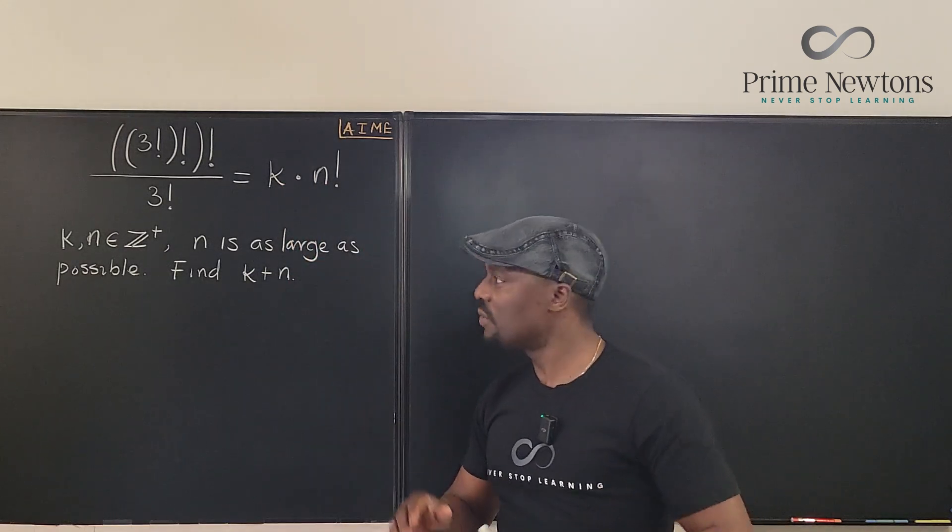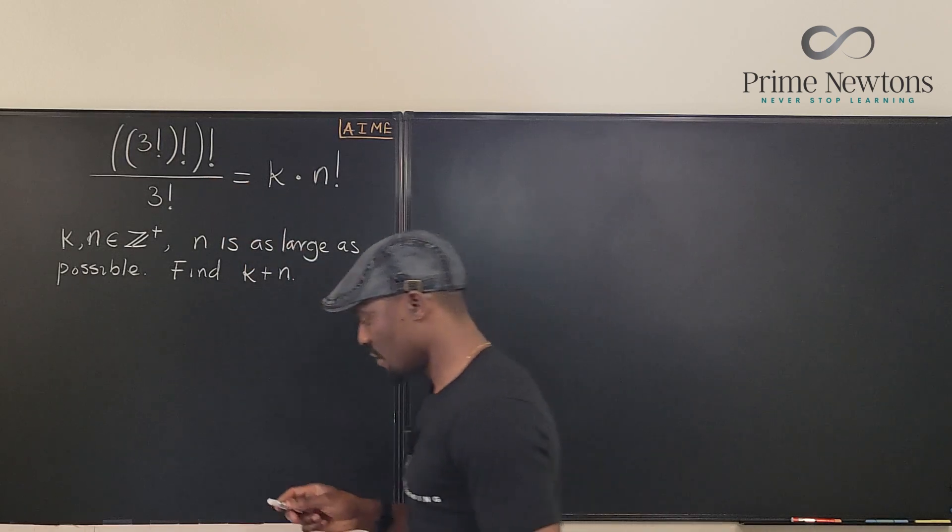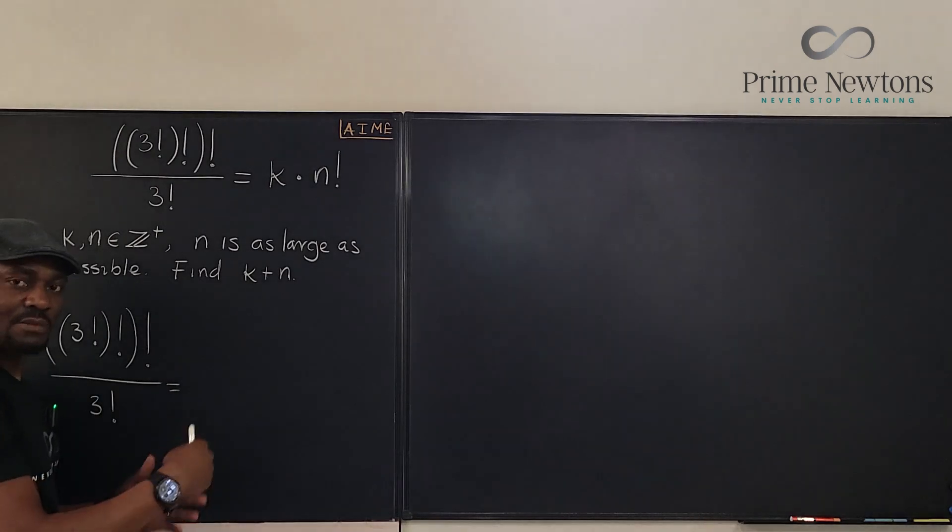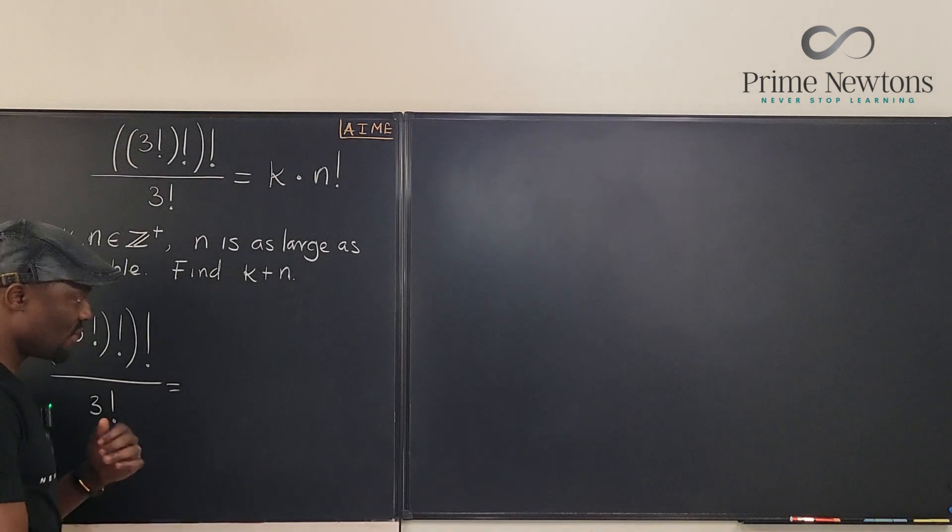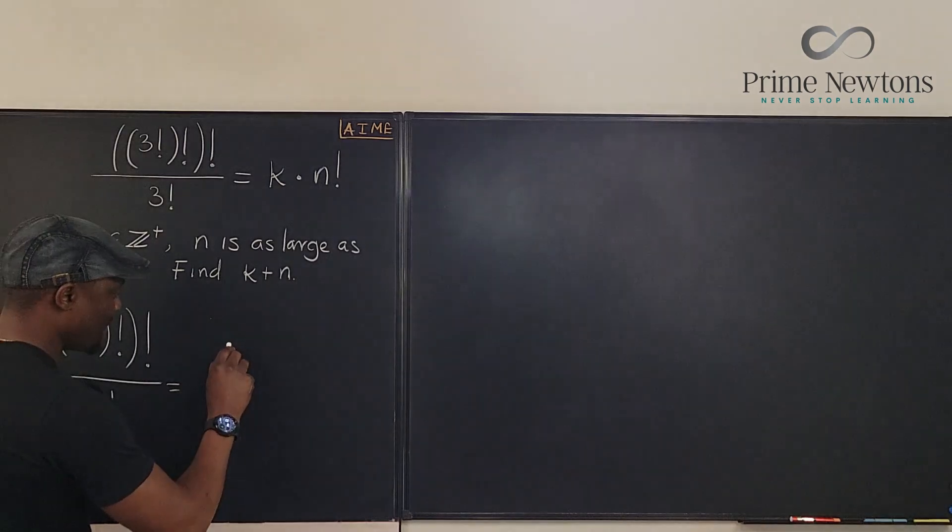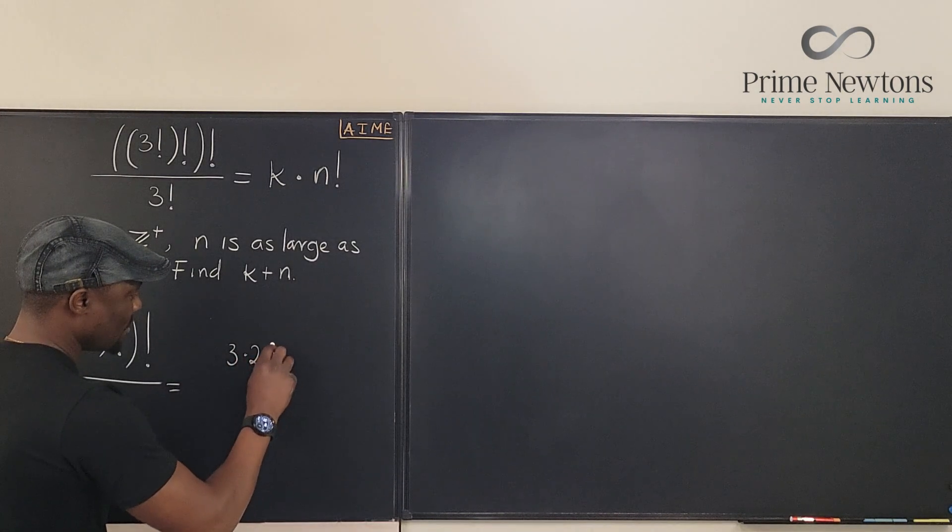So what we're going to do is just start from the top. Okay, so we're going to say that what is 3 factorial? It is 3 times 2 times 1, right? So this is equal to, I'm just going to follow all the steps, it's going to be 3 times 2 times 1.